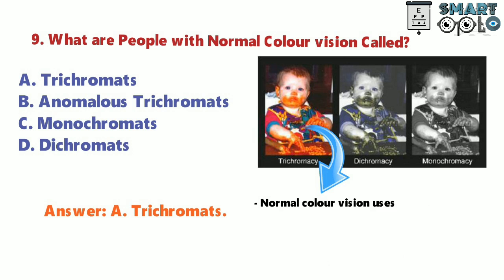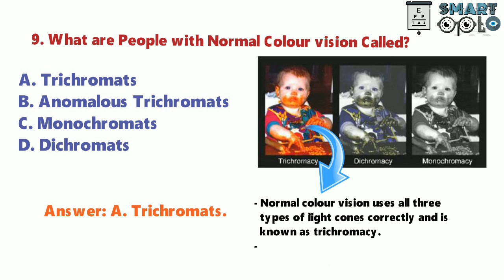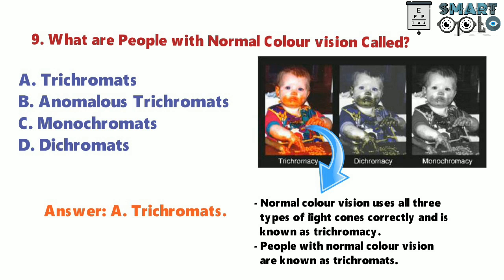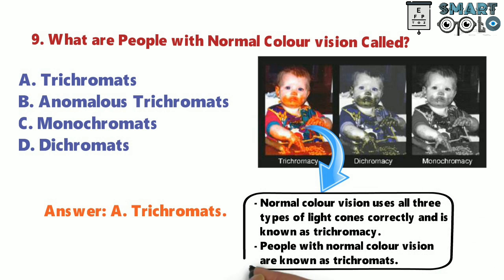Normal color vision uses all three types of light cones correctly and is known as trichromacy. People with normal color vision are known as trichromats.